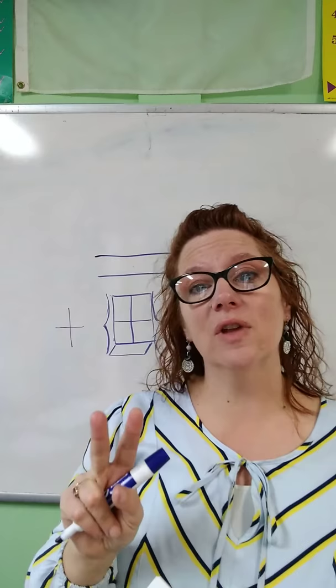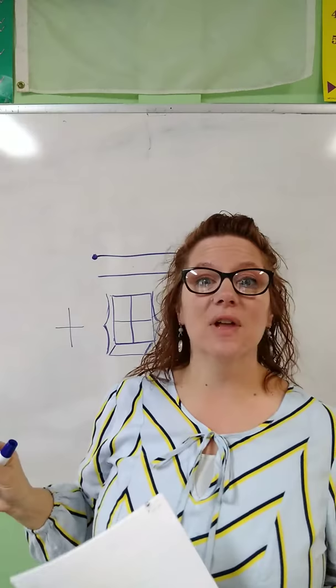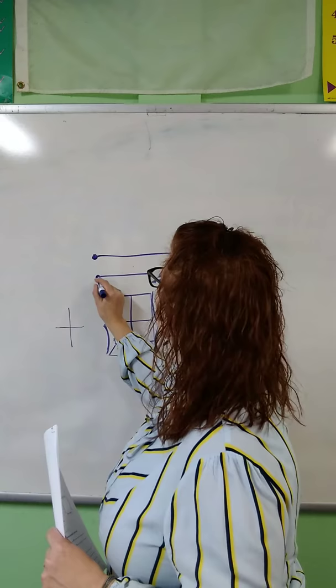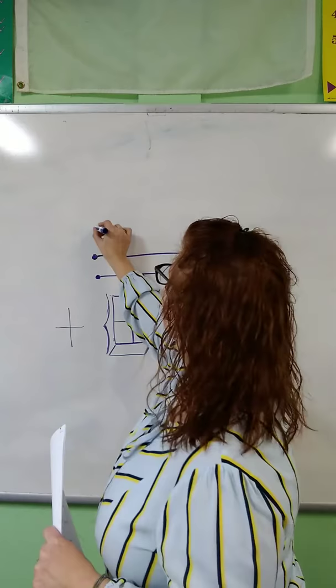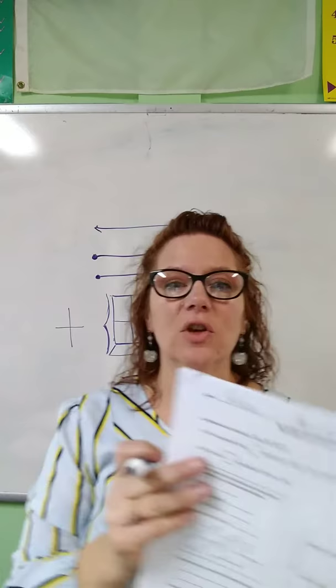Now when we talk about the word line, there are two different kinds I want you to know. One is called a line segment, and a line segment has two end points. Another kind is a regular line, which has one end point and keeps going in one direction. And then plain lines have no end points and continue in both directions forever — we use arrows to show those.